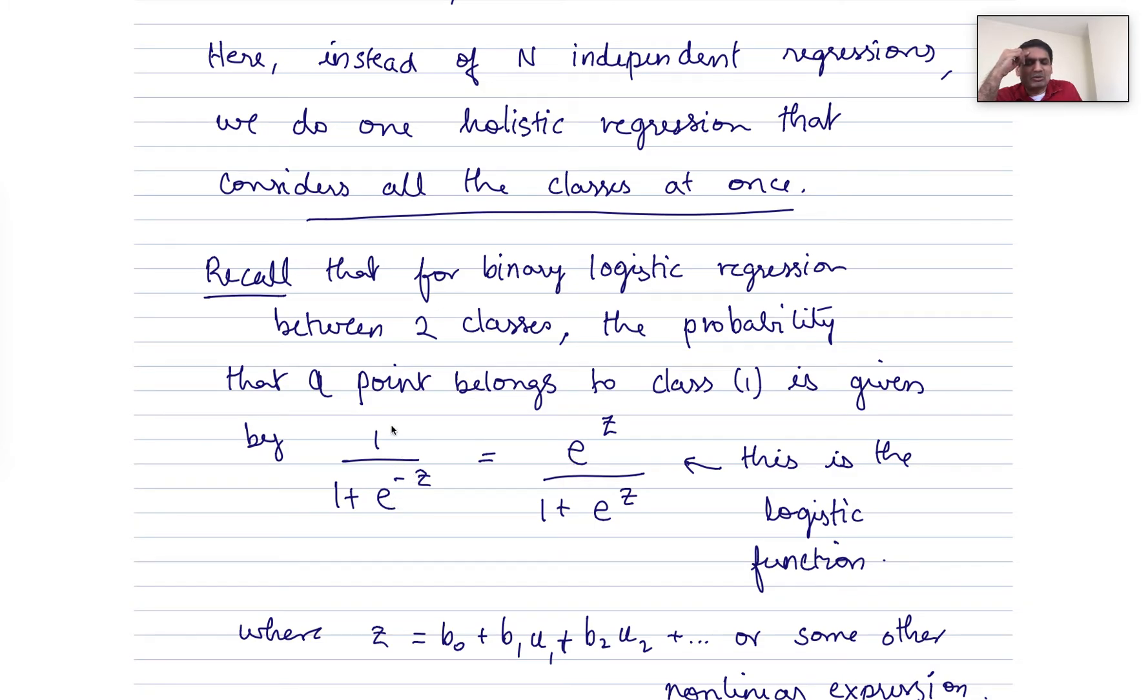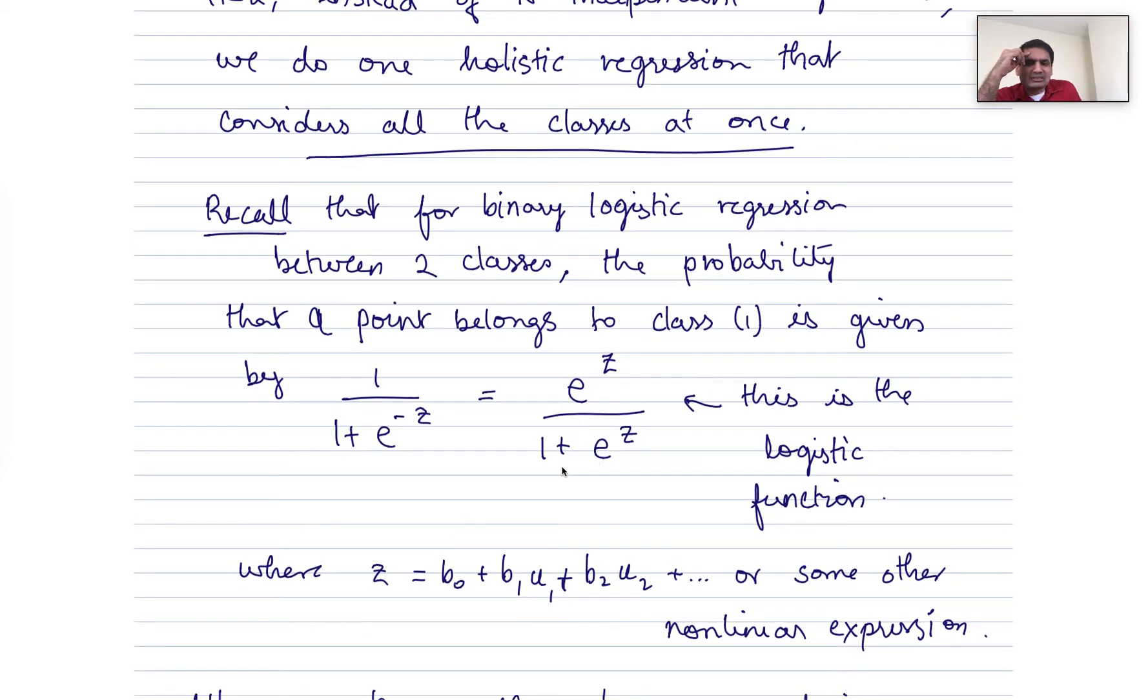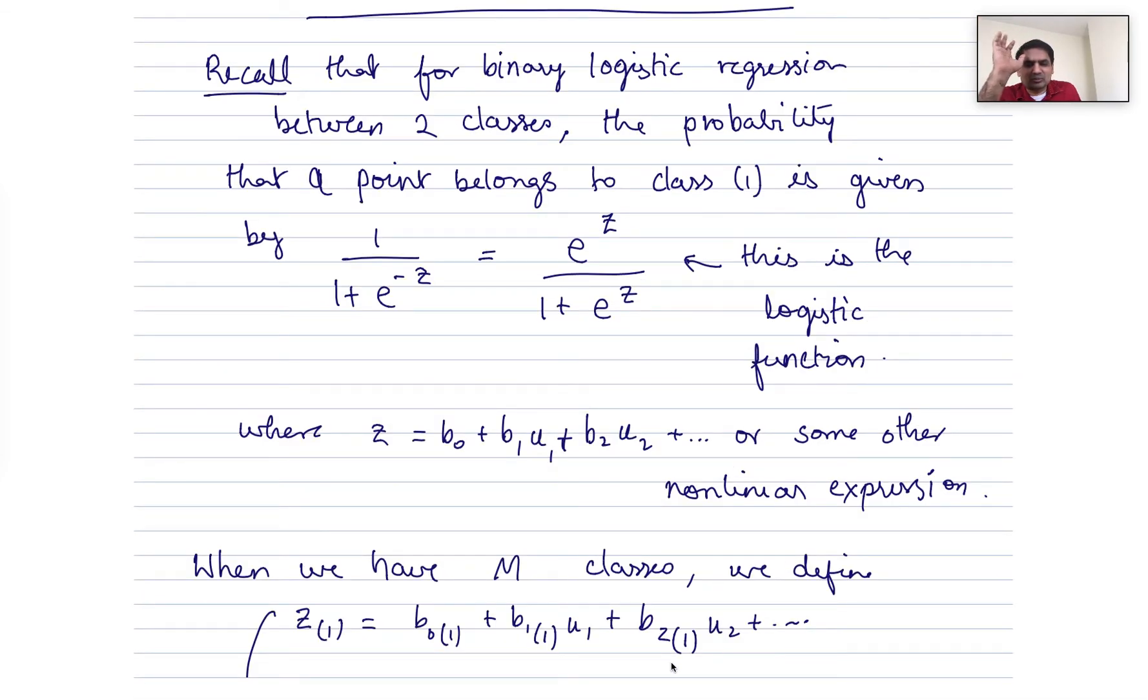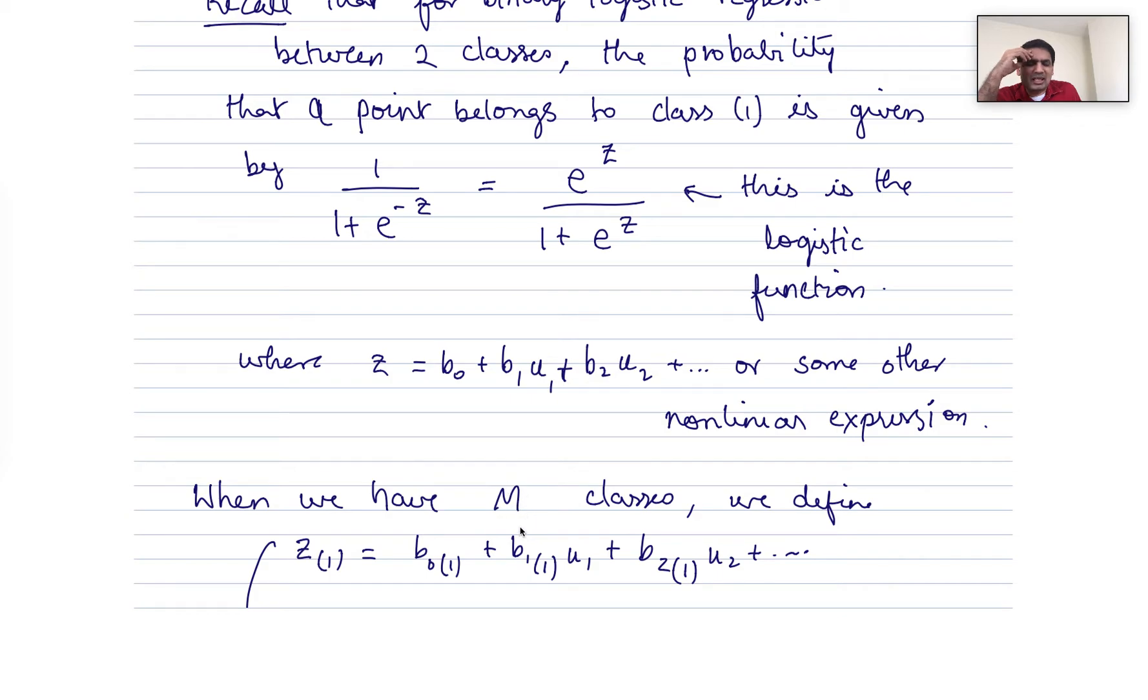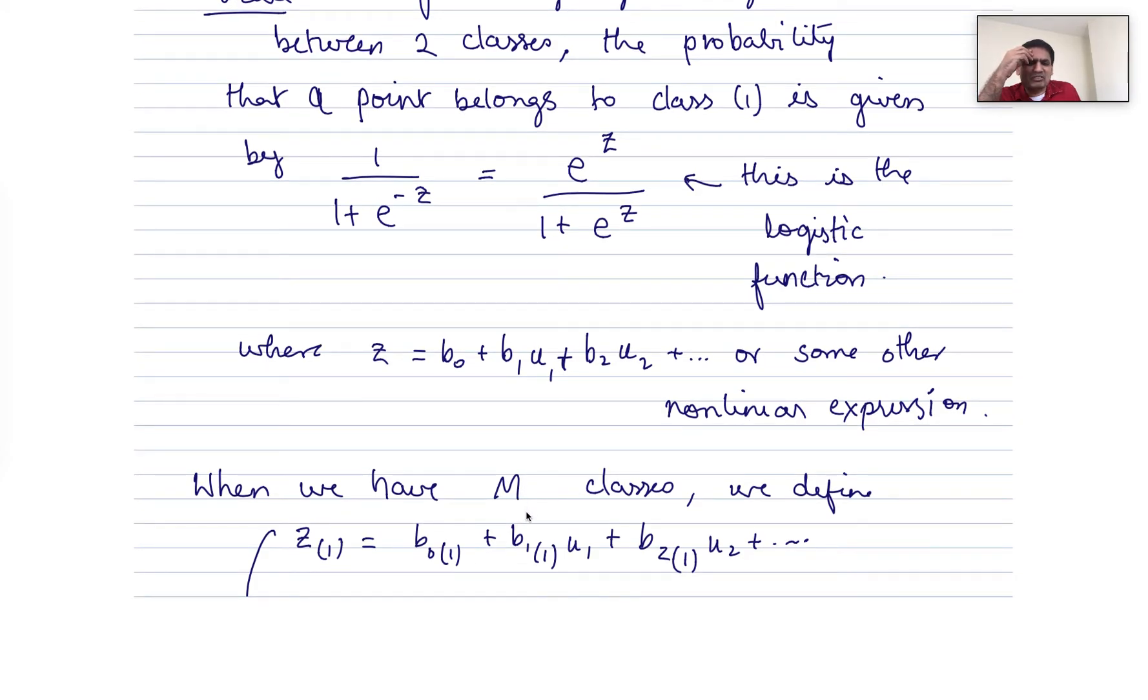E to the z, so multiply both the numerator and denominator by e to the z, this equals this. Where z itself can be some complicated function of the inputs. We can either have a linear expression or a nonlinear expression. Everything that follows applies to whatever expression that we have. We just need to make the appropriate modifications for linear versus nonlinear. But just for illustrative purposes, I'll use the linear version. Let's say we have m different classes.